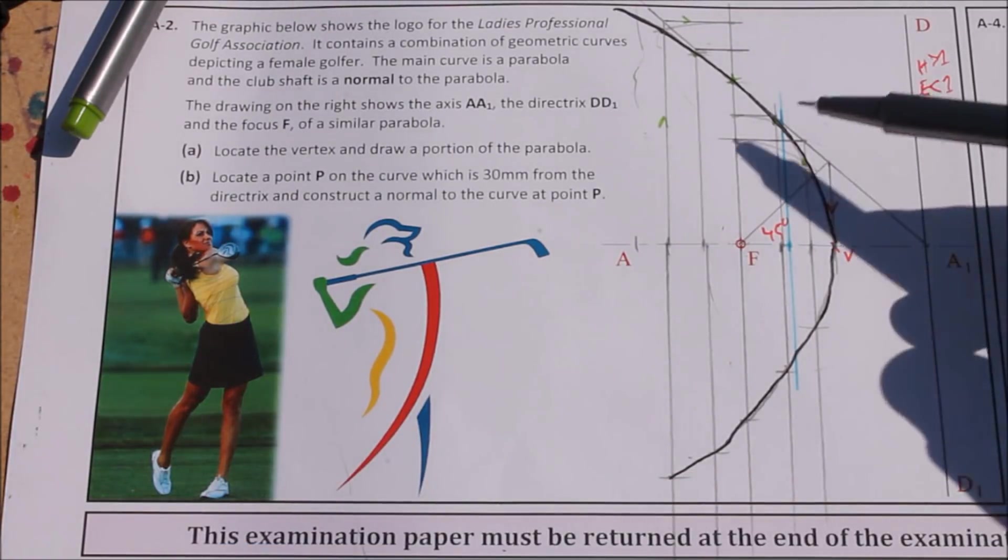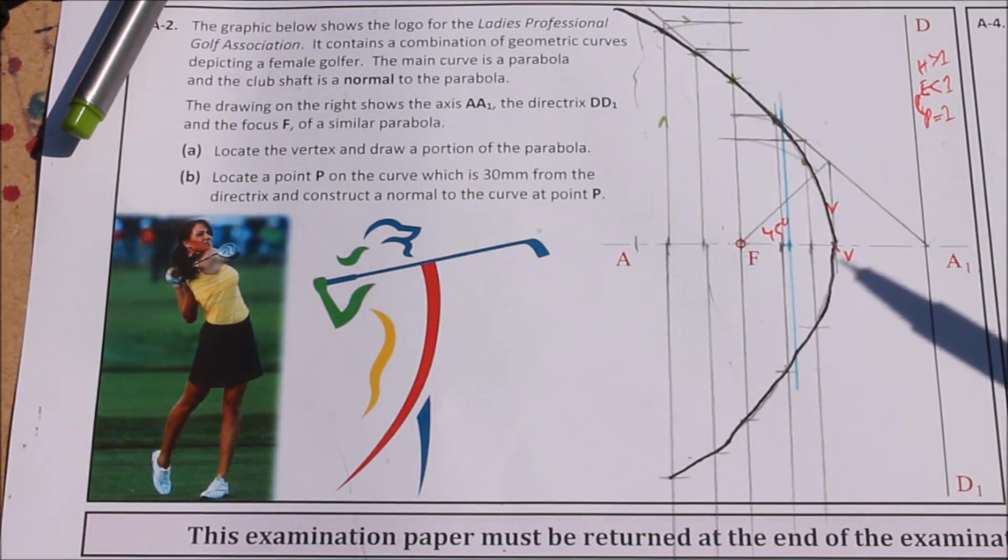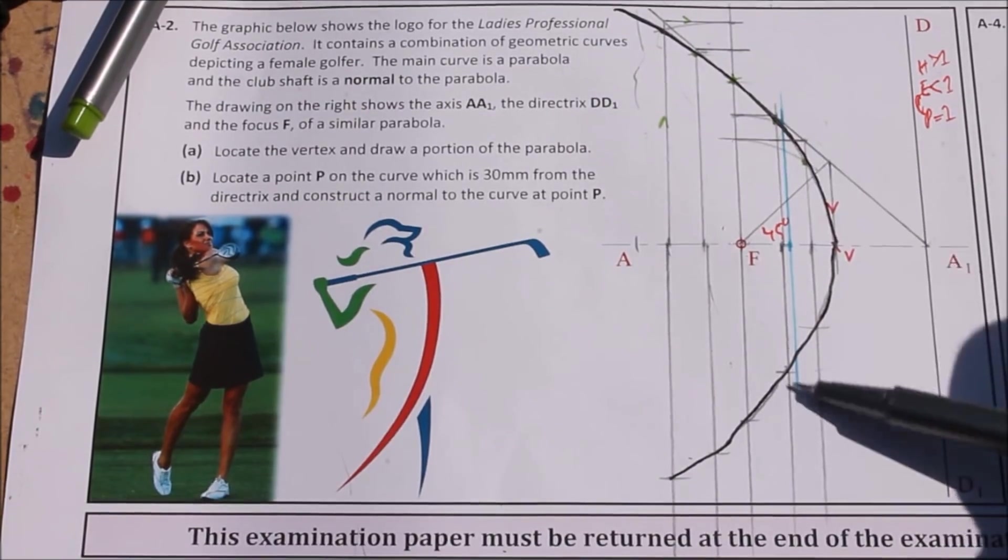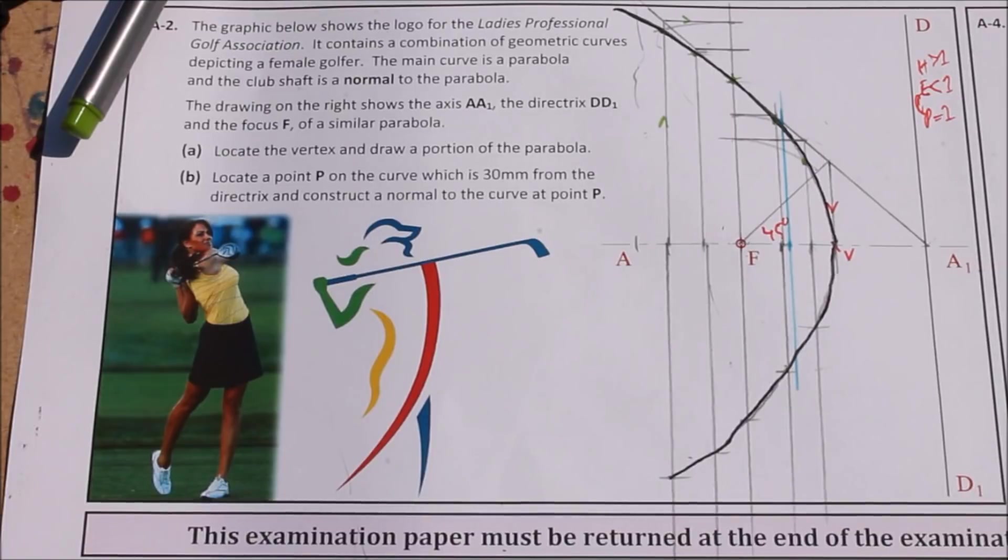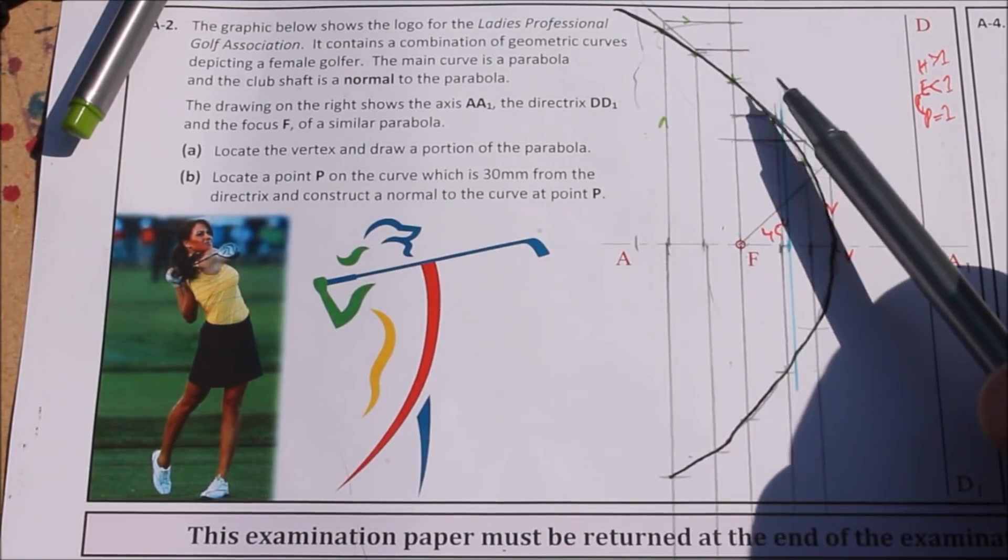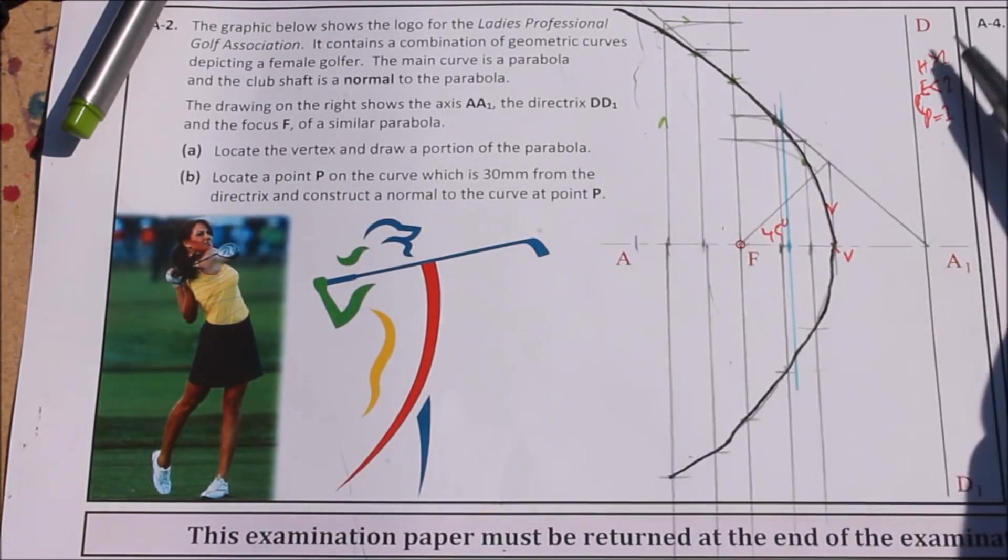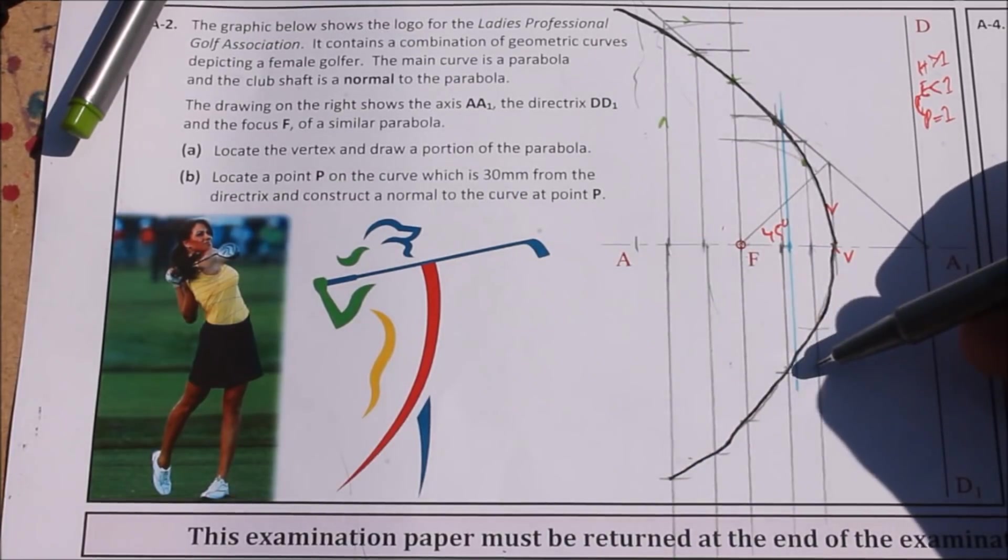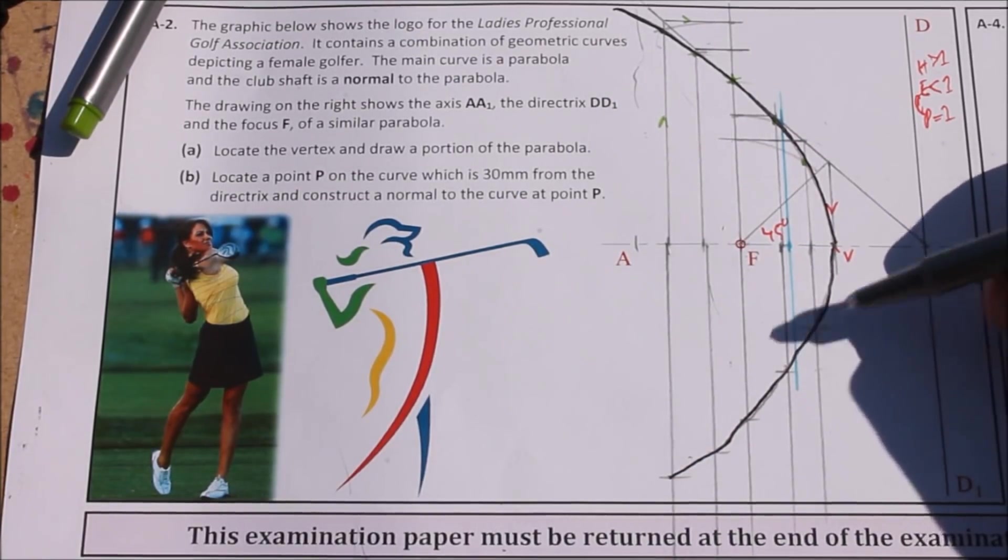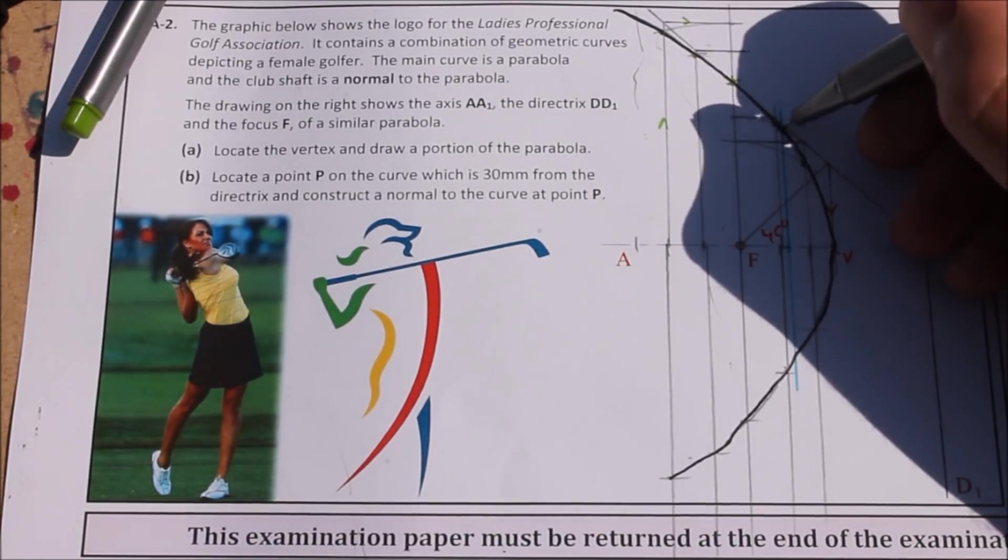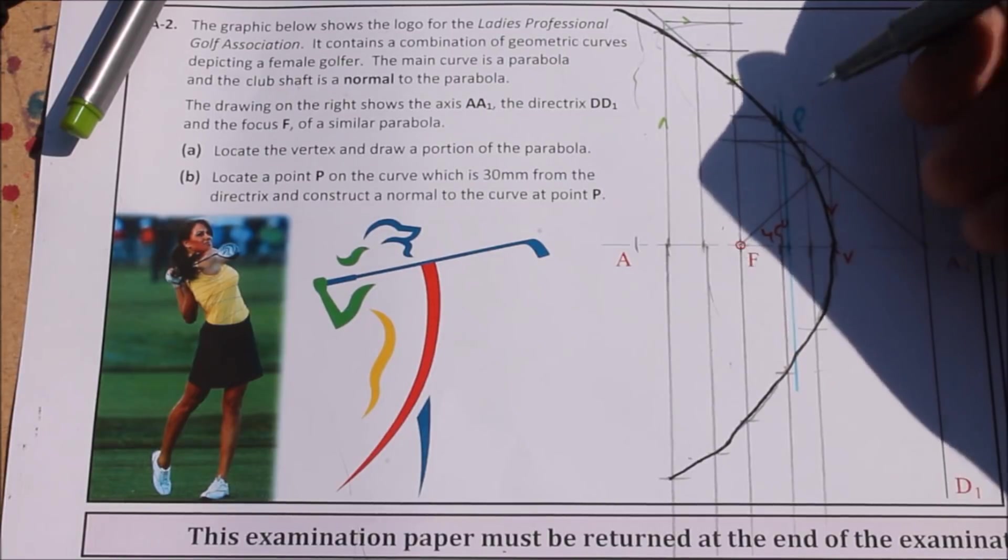So point P, it says locate point P on the curve which is 30mm from the directrix and construct a normal to the curve at point P. Now, I was going to say point P could be down here too. But look at the logo, you're following the logo and the normal of it, the shaft of the golf club is at this top one here. So I was going to draw it down here just to give a bit more detail because there's a lot of lines there, but you've got to follow the question. So this has to be on the curve here. This is point P.